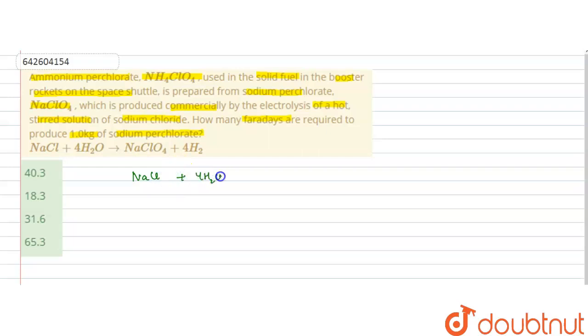NaCl plus 4H2O forms NaClO4 plus 4H2. Now if we see these oxidation states, in NaCl sodium is in plus one oxidation state, chlorine is in minus one, and water has plus one for hydrogen and minus two for oxygen.